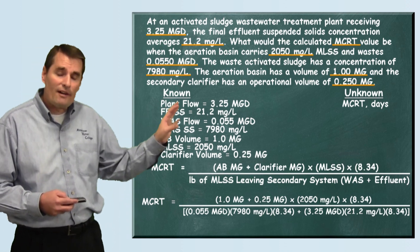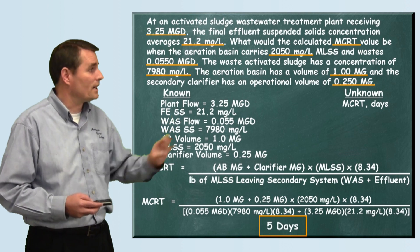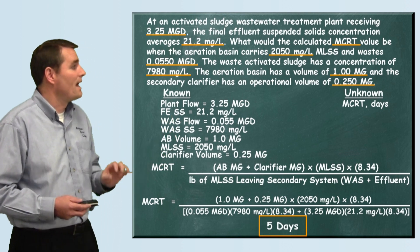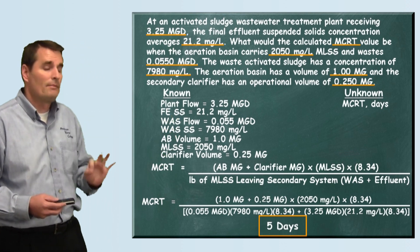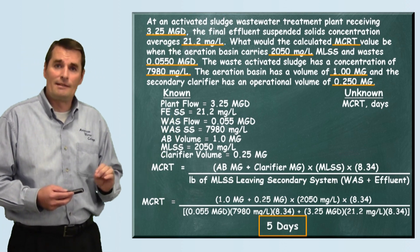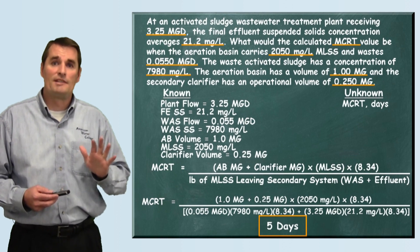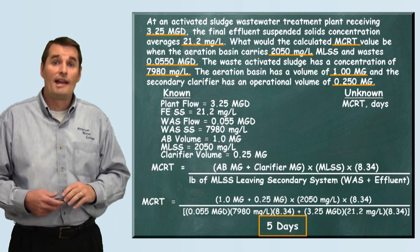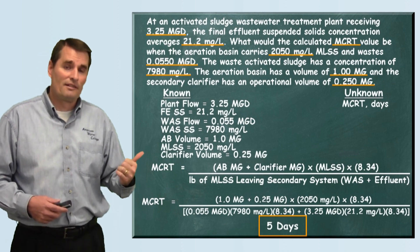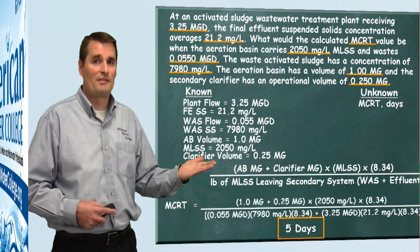Carefully working through the math, I find that the mean cell residence time — the MCRT — is five days. And that is how this problem is solved.